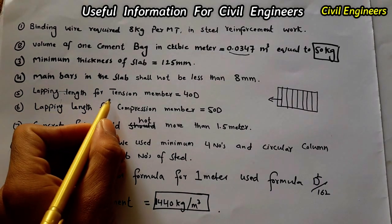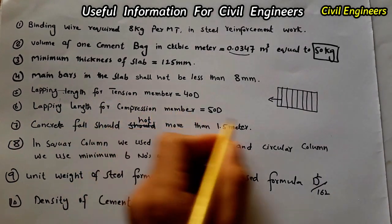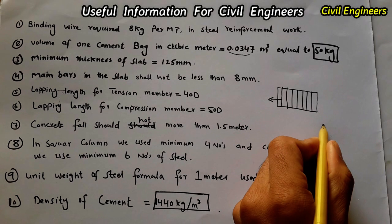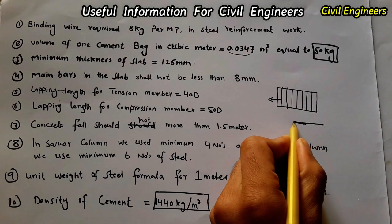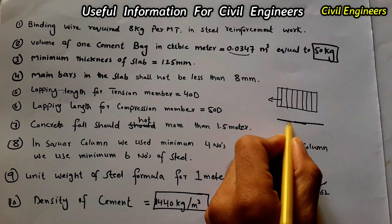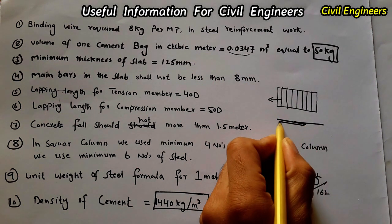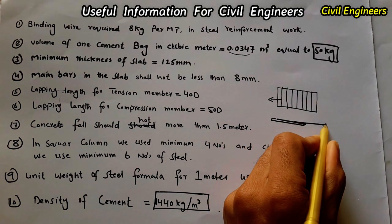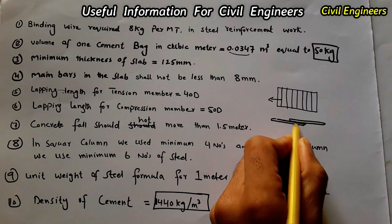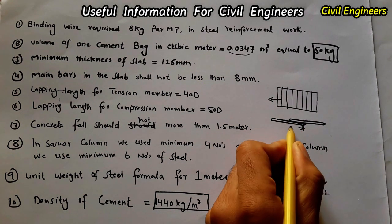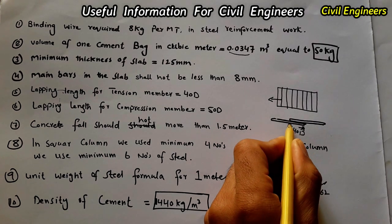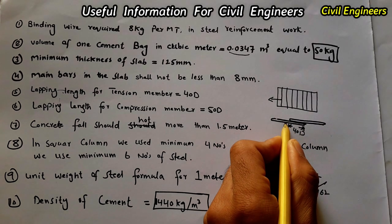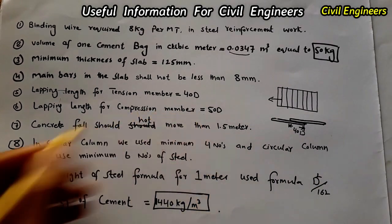The next point is lapping length for tension. For a tension member, the lapping length will be 40d, where d is the diameter of the steel bar you are using.